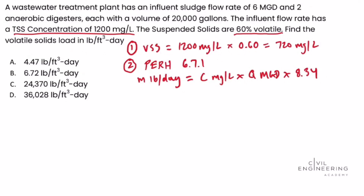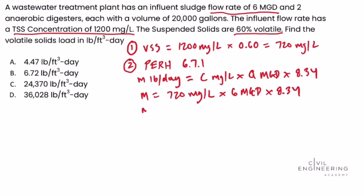Plugging in the values, we're solving for mass in pounds per day. We use the volatile suspended solids concentration from step one — 720 milligrams per liter — not the total suspended solids concentration. Multiply that by the flow rate of 6 million gallons per day, times the constant 8.34. Working through the equation, we get mass equal to 36,028.8 pounds per day.